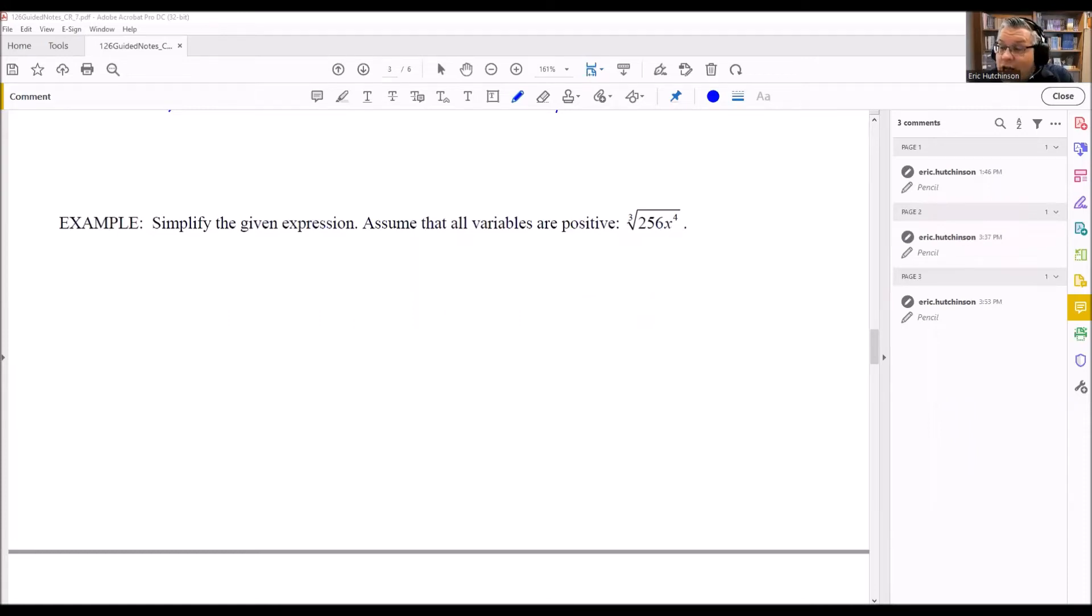For problems like this, where you have x raised to a power that's not the same as the index, and also it's not a multiple of the index—in other words, 4 divided by 3 doesn't go on evenly—for this kind of problem, you're going to end up with some kind of radical with an x inside, and so these are done a little bit differently. We'll take a look at examples of this now.